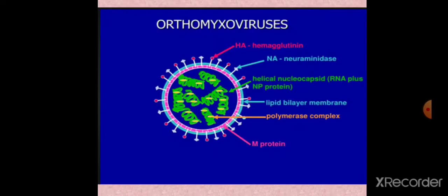In the diagram, hemagglutinin spikes (pink color) are visible, and two types of proteinaceous spikes are present: hemagglutinin and neuraminidase. The envelope is shown, and beneath it is an additional pink-colored layer — that is the M protein (matrix protein). The genome is present in multiple segments — six to eight linear single-stranded RNA segments.